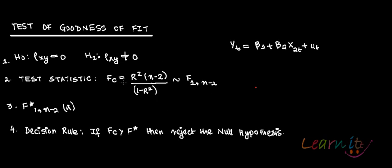What the goodness of fit or F-test is trying to tell you in a simple linear regression model is this: suppose you have the model yt equals beta1 plus beta2*x2t plus ut. How many variables are there in this model? Only one variable. So it is trying to test whether the variables included in the model are statistically significant or not.